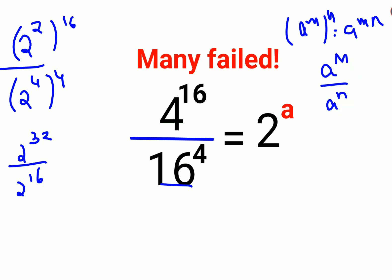You can directly write this as a raised to m minus n. So this becomes 2 raised to 32 minus 16. The answer comes out to be 2 raised to 16.